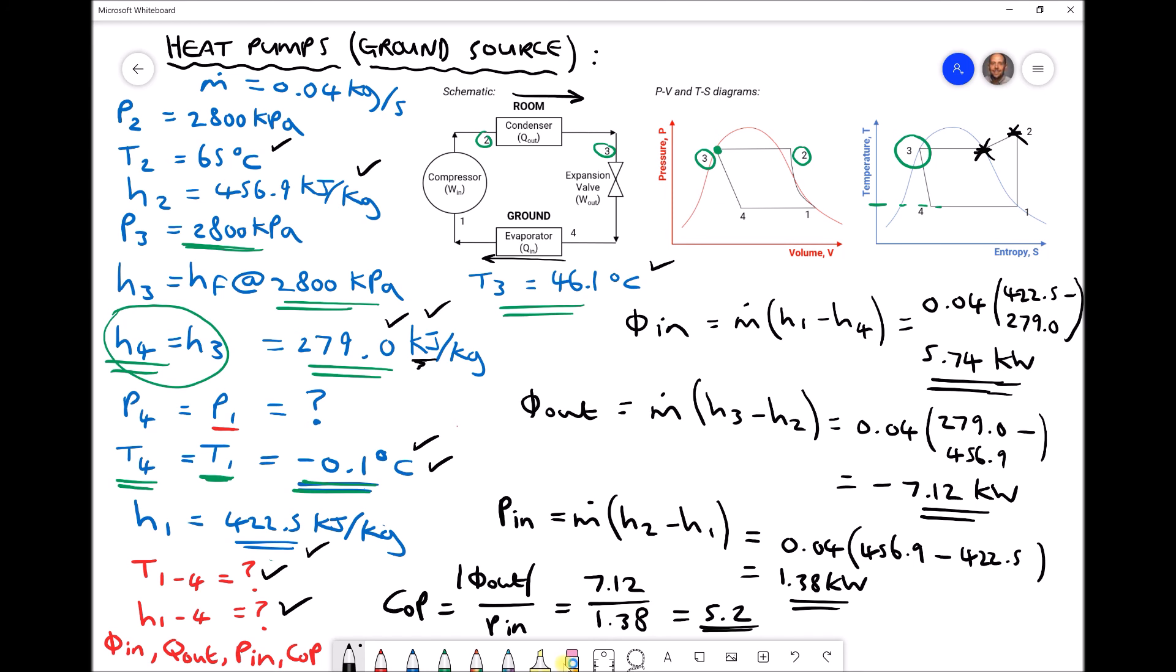Now without having all of those enthalpy values, and without having the rate of heat in, rate of heat out, and rate of work done, we wouldn't be able to determine the coefficient of performance for our heat pump.